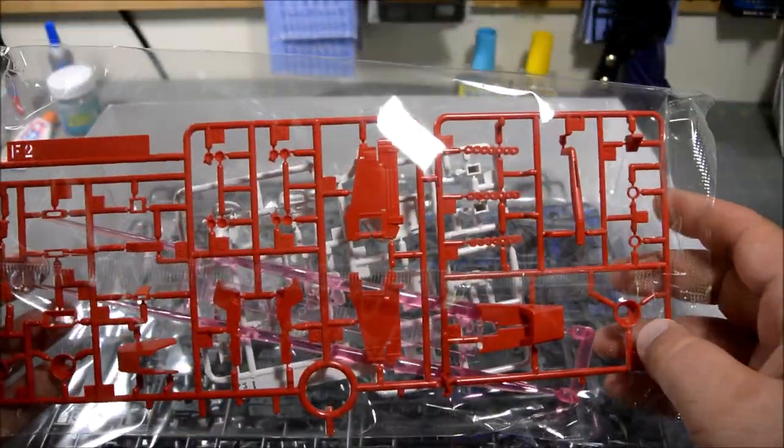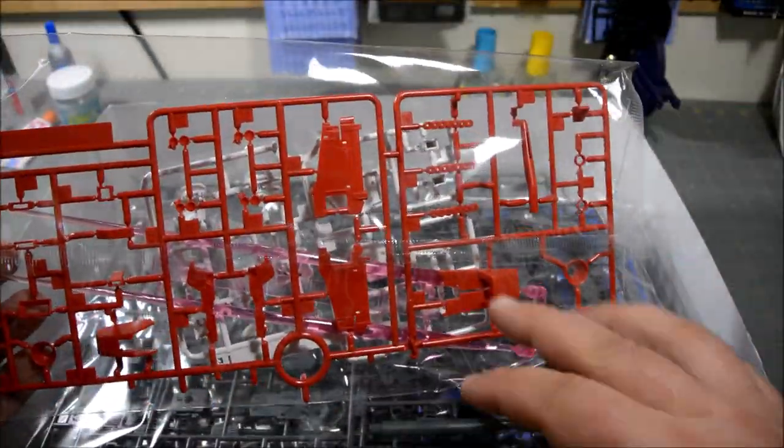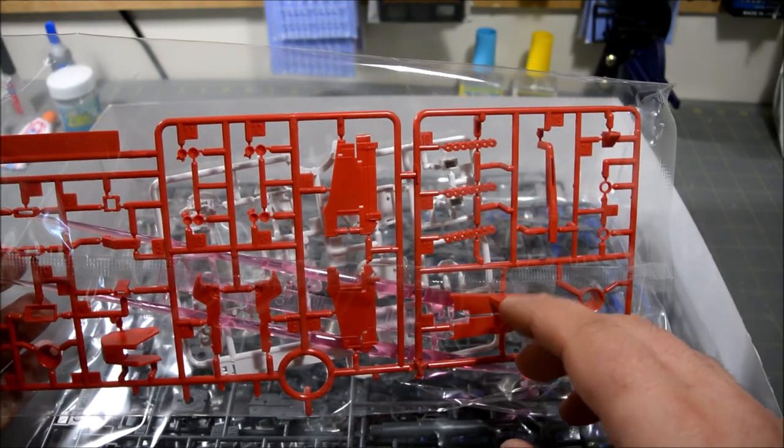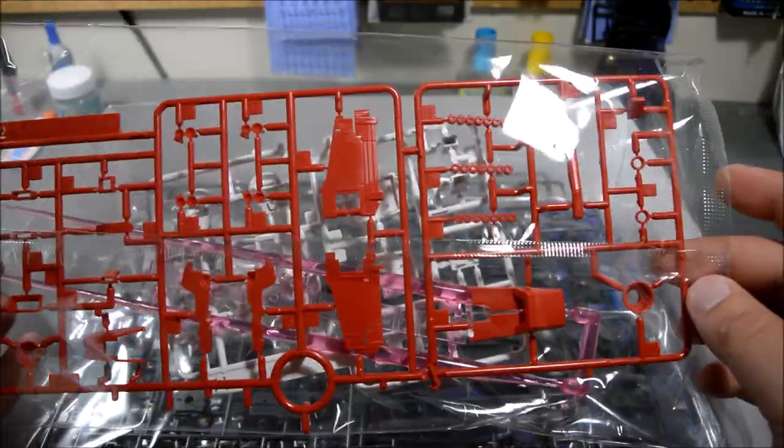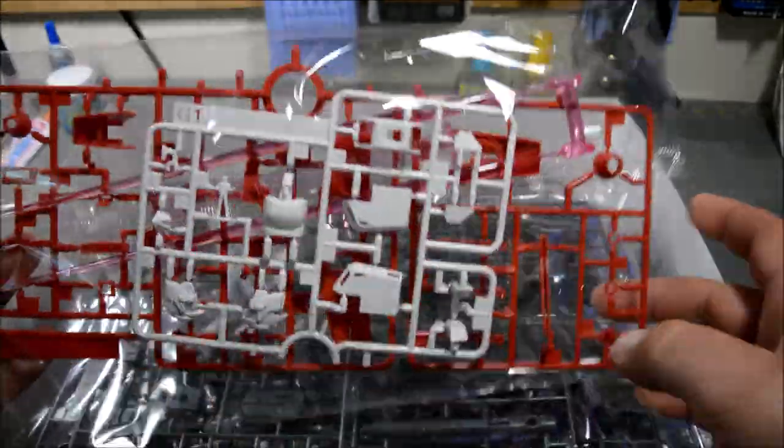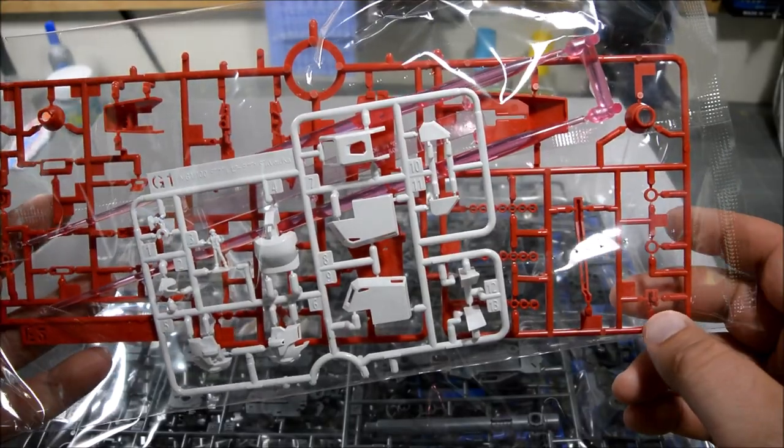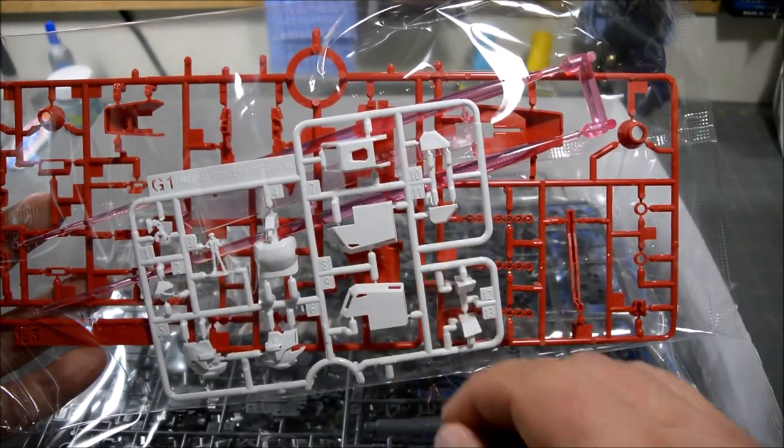Here's a runner of red parts for the wings, thruster innards. There's the missiles for the backpack. Let's see, just a few other little bits and pieces there.